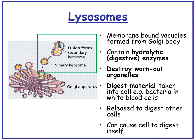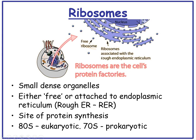Lysosomes are membrane-bound vacuoles formed from the Golgi body, and they contain hydrolytic (digestive) enzymes. They destroy worn-out organelles, digest material taken into the cell such as bacteria in white blood cells, and can be released to digest other cells or cause a cell to digest itself. Ribosomes are small, dense organelles that can be free in the cytoplasm or attached to the endoplasmic reticulum to form the rough ER. They are the site of protein synthesis. In eukaryotes, ribosomes are 80S, whereas in prokaryotes they are slightly smaller at 70S.